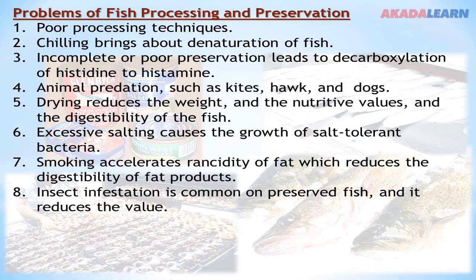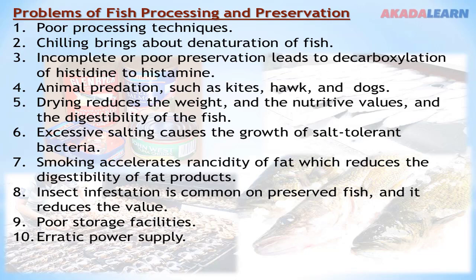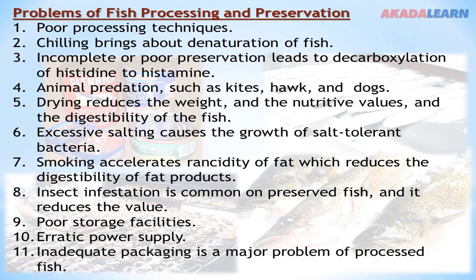Insect infestation is common on preserved fish and reduces its value. Poor storage facilities can also be a threat to fish processing and preservation. Erratic power supply is a major issue, most especially in methods like refrigeration or freezing — in situations where there is erratic power supply, such methods cannot be reliable. Inadequate packaging is also a major problem of processed fish.